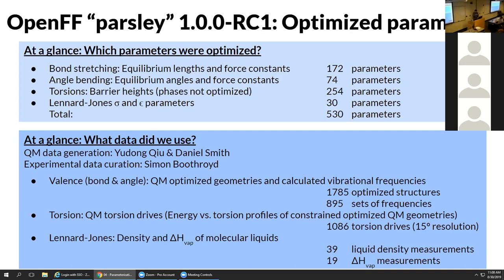The valence parameters are informed by ab initio optimized geometries and calculated vibrational frequencies - there are almost 1800 optimized structures and 900 sets of frequencies. The torsion parameters are informed by torsion drives, which are energy versus torsion angle profiles of constrained optimized geometries. For Lennard-Jones, we look at the density and heat of vaporization of molecular liquids - following the historical approach used to optimize OPLS parameters. We have a total of 39 liquid densities and 19 heats of vaporization.